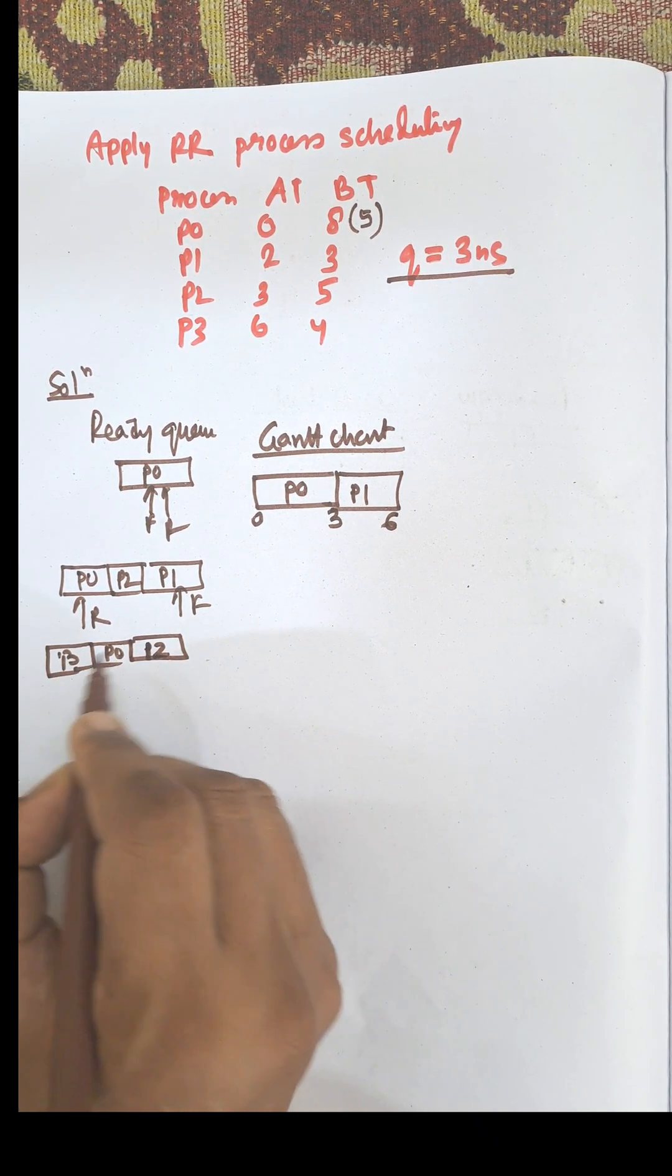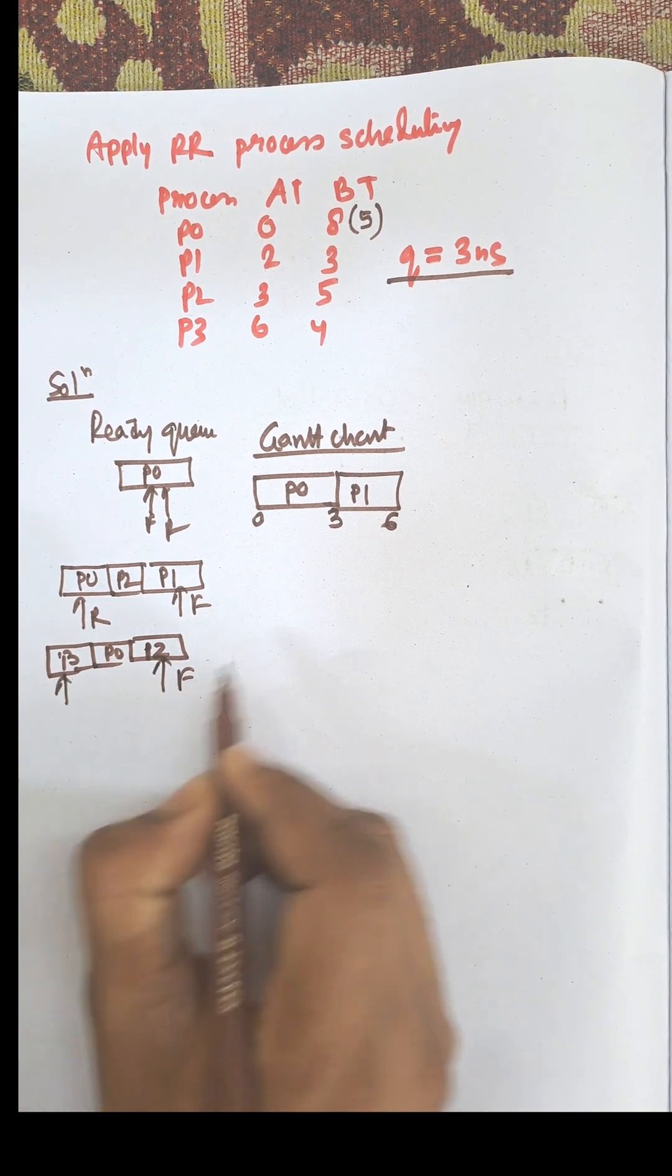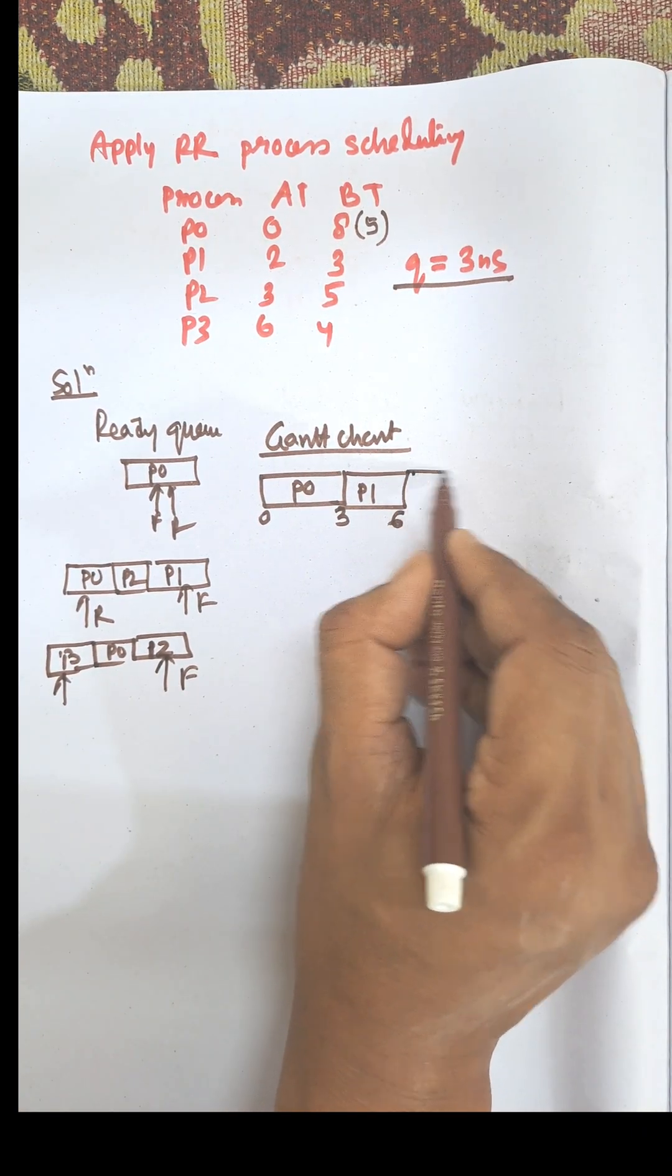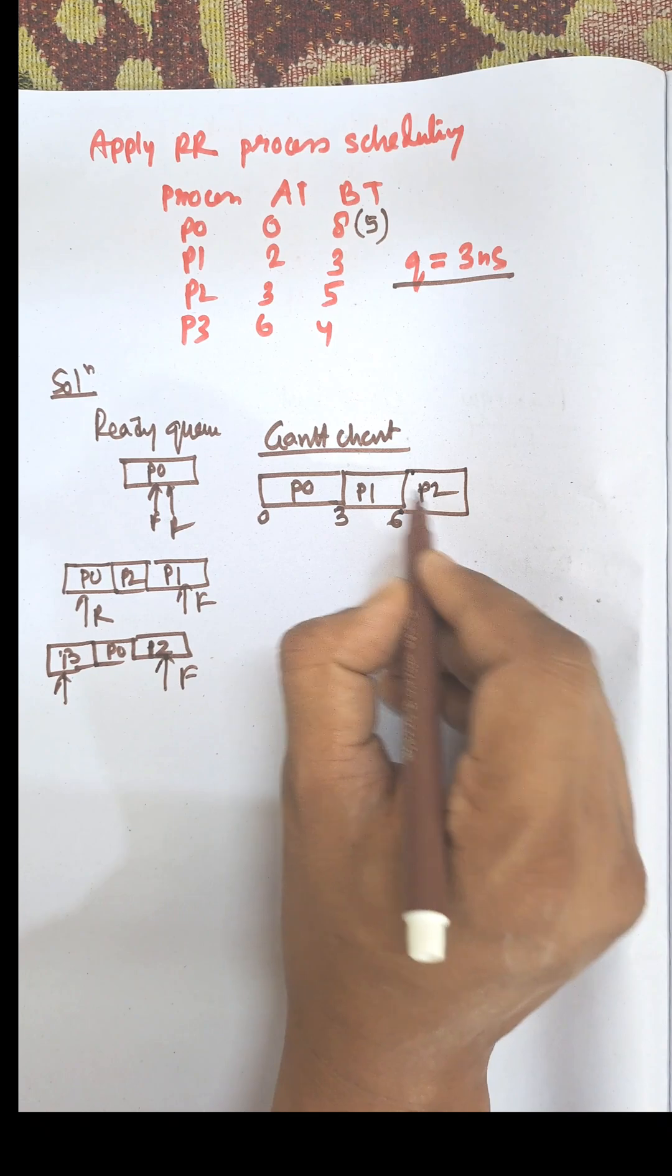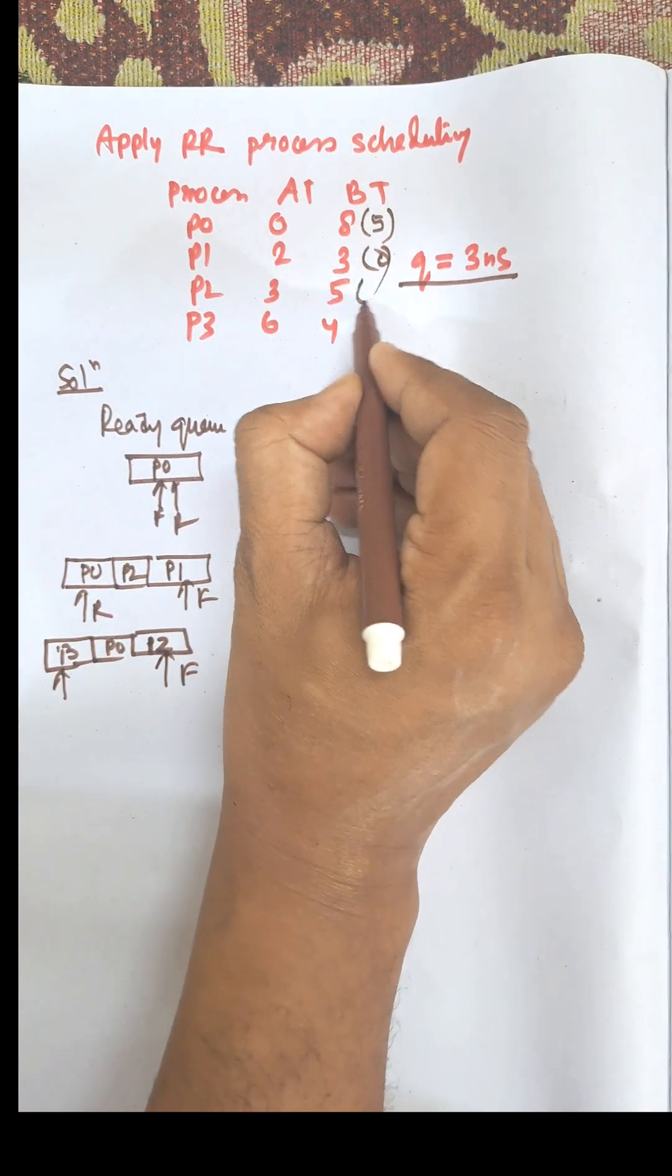As P1 is terminated, P2 will be the new front. Now P2 will be selected. P2 is executed: 3 plus 6 equals 9, remaining time is 2.